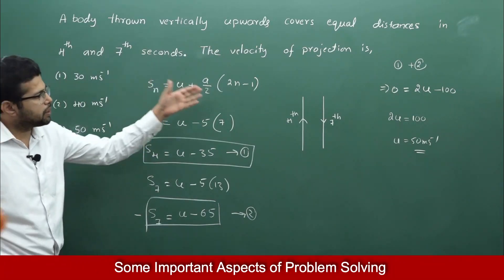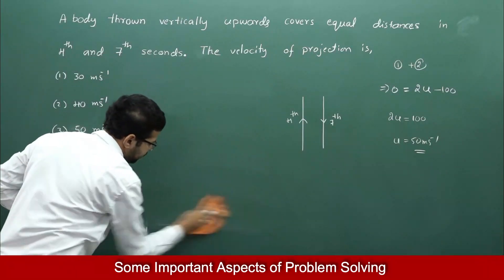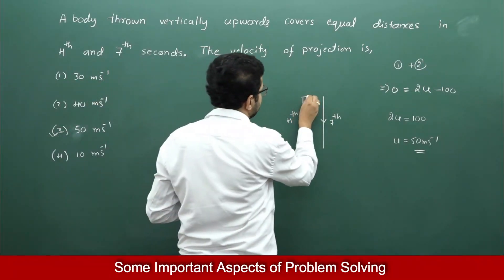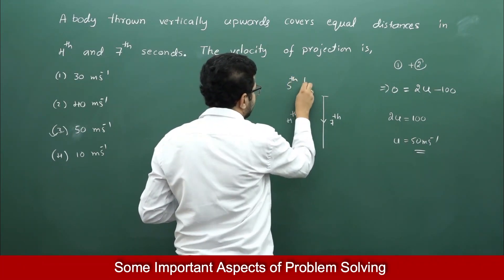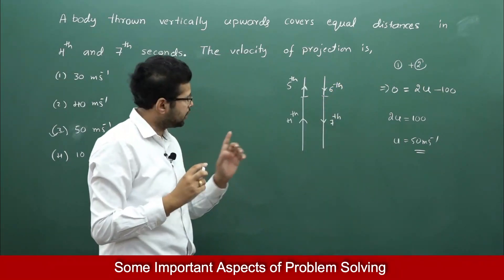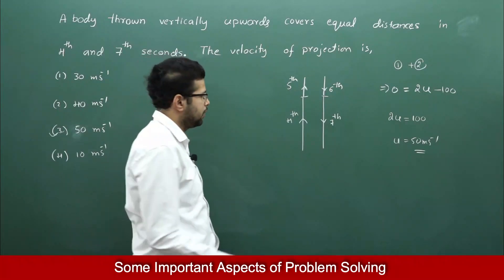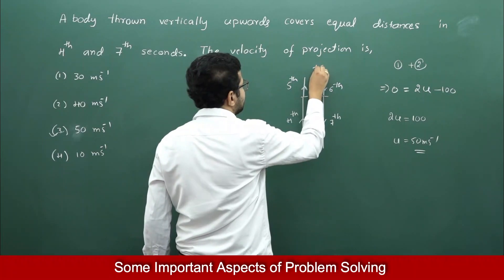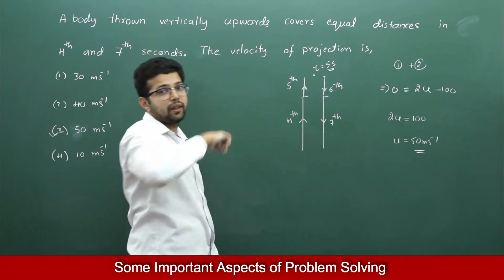Once this picture comes to mind, we realise: if the distance in the 4th second equals the distance in the 7th second, then definitely the distance in the 5th second equals the distance in the 6th second. During the 5th second the object is going upwards, and during the 6th second it is coming downwards. At the end of the 5th second — or the beginning of the 6th second — the time is 5 seconds.